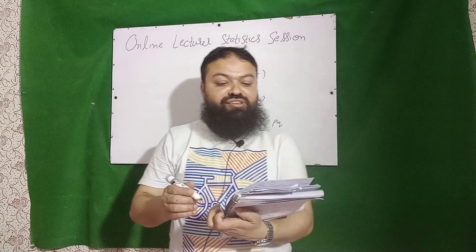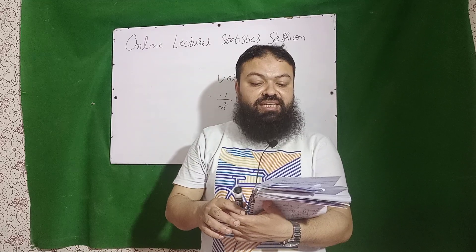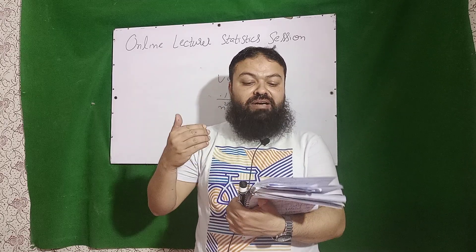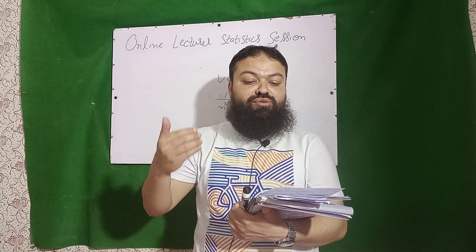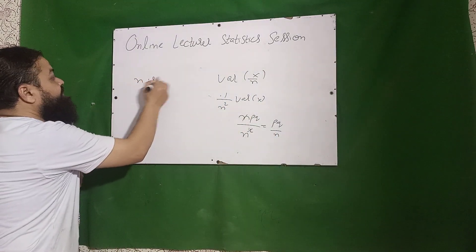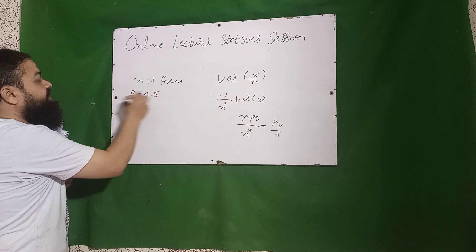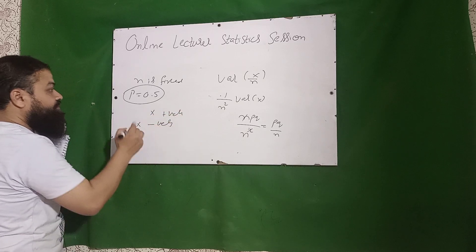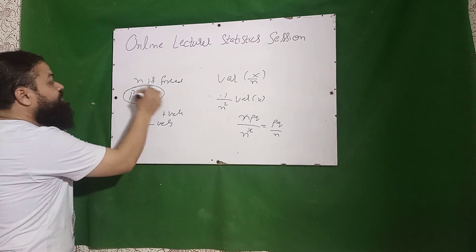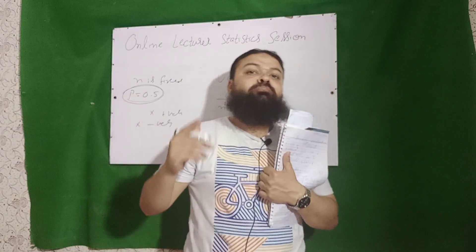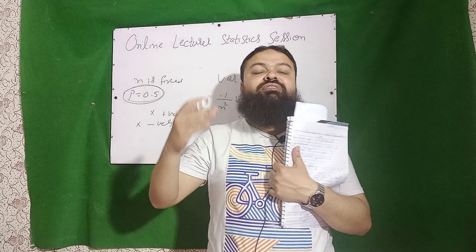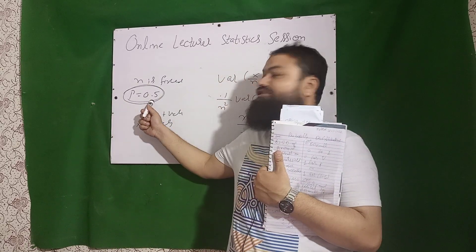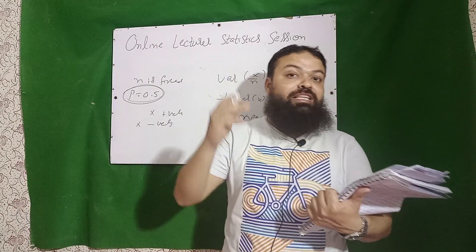Next question: for binomial distribution, n is fixed and P is 0.5. The options are: (A) Poisson distribution will be a good approximation to the binomial, (B) Poisson will be a bad approximation, (C) positively skewed, (D) negatively skewed. When P equals 0.5, it can never be positively or negatively skewed, so those options are eliminated. When P is not very small, Poisson is not a good approximation — Poisson applies when n is large and P approaches 0. Since P is 0.5, the correct option is that Poisson will be the bad approximation.